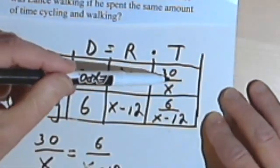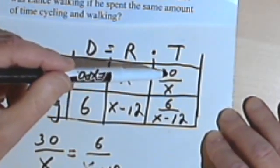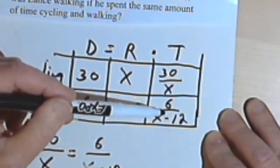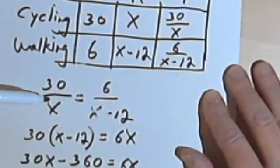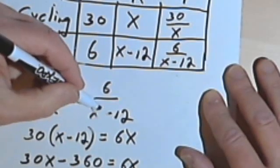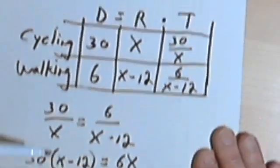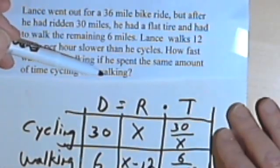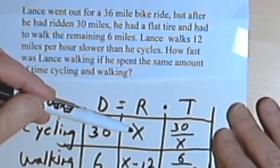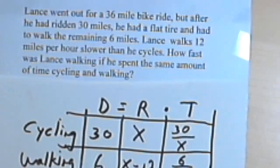I was told that the times were the same. So I could take this time, the 30 over x, and make that equal to the walking time, the 6 over x minus 12. I set up an equation. And then I just solved that equation, found out what x was, and then went back and made sure I was answering the original problem, which was not what is x, but what is x minus 12. Okay? And that's all there is to it. Take care. I'll see you next time.